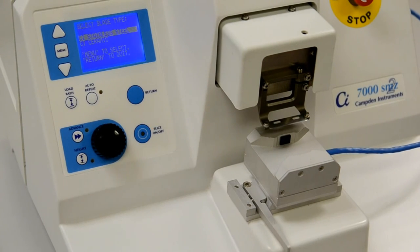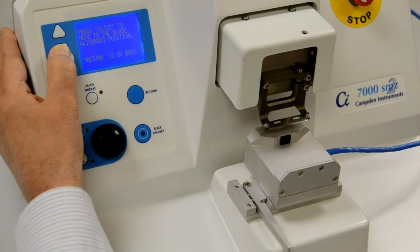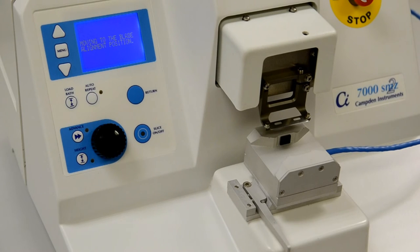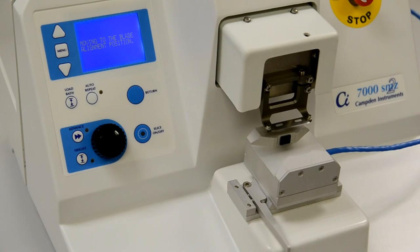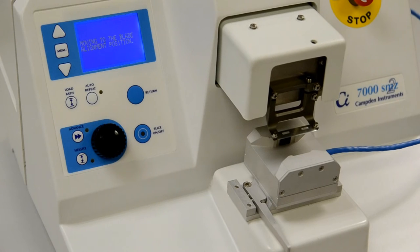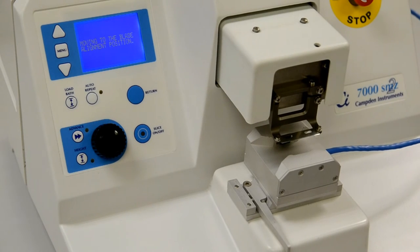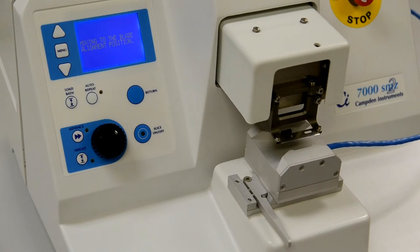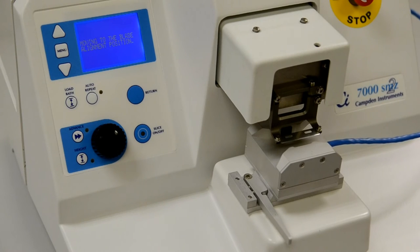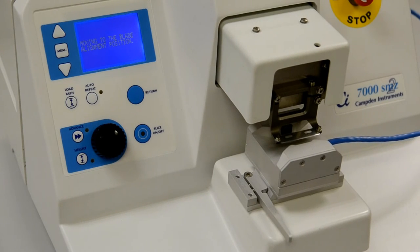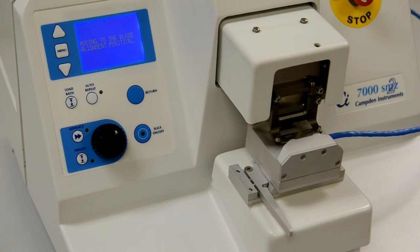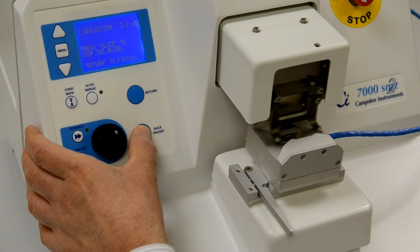Confirm that it has been fitted and confirm the type of blade. The instrument will now reposition the blade edge relative to the optical unit and ask you to press the slice on-off key to initiate blade vibration. The current blade alignment error will now be displayed, so press the slice on-off key again to stop the vibration.